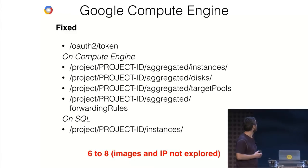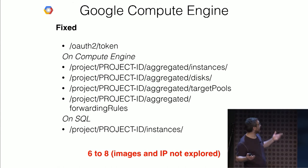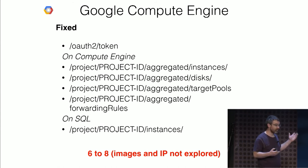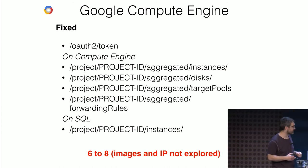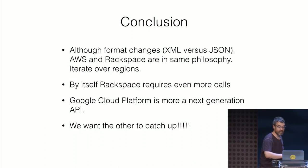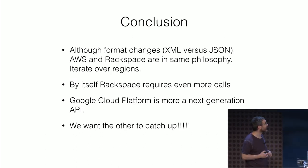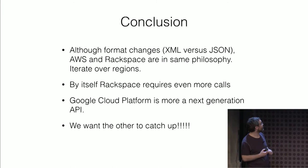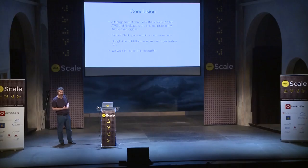So in the end, what do we have? Well, we have six to eight queries depending. I didn't explore image and IP yet. So that's really better. As a conclusion of this small talk, the surprise came really from Google Compute Engine, because basically it's more next-generation stuff. I didn't plan to do it, so my conclusion is to say to AWS, OpenStack, and all the others: please beef up your stuff and provide similar capabilities. Thank you.